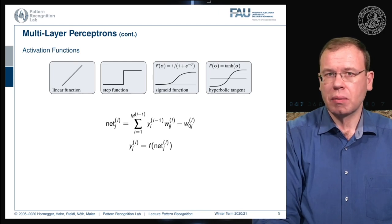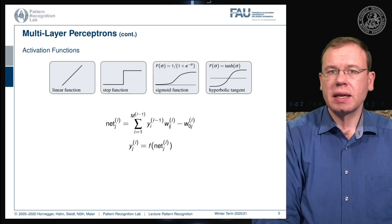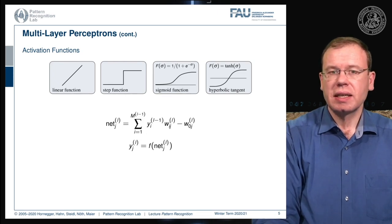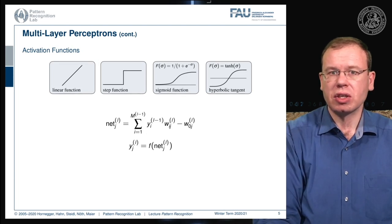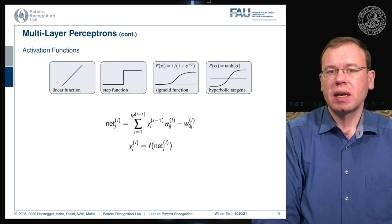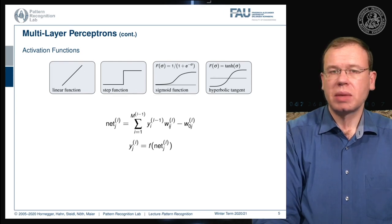In later classical approaches, the sigmoid (logistic) function was very commonly used. As an alternative, the hyperbolic tangent was also used because it has some advantages with respect to optimization.